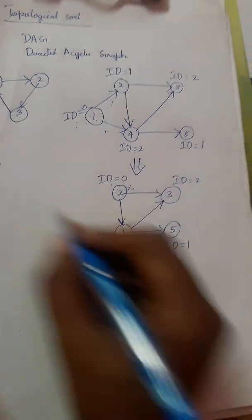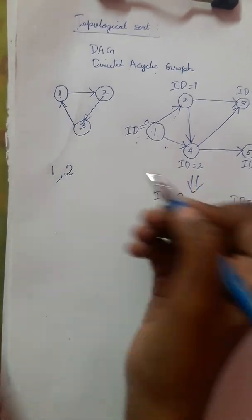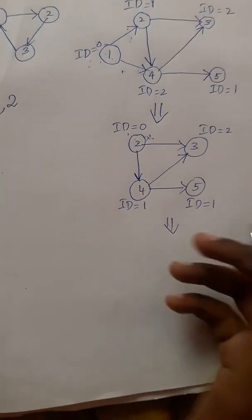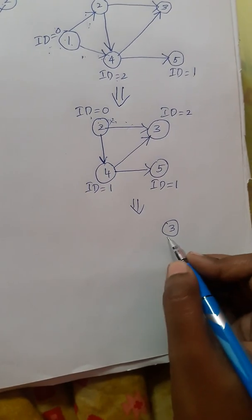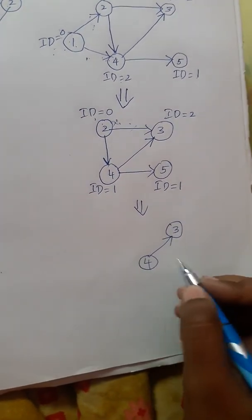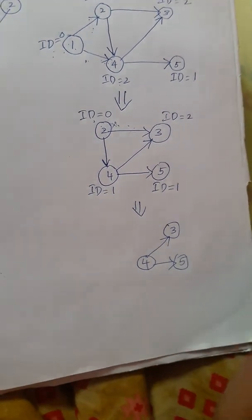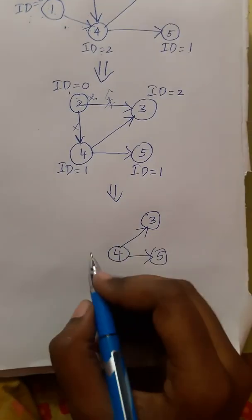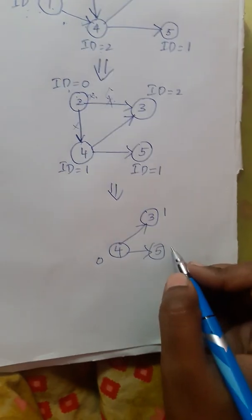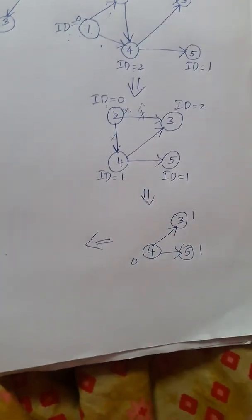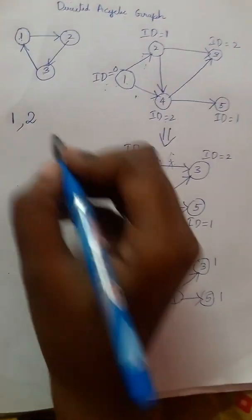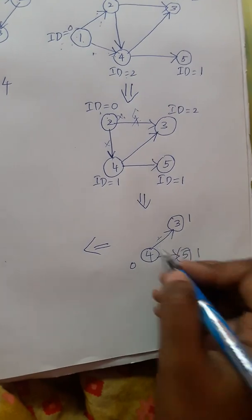We write '1, 2' in the result. After eliminating node 2 and its arrow marks, the remaining nodes are 3, 4, and 5 with in-degrees 0, 1, and 1. Node 4 has the minimum in-degree now — wait, node 3 has 0 — so we eliminate node 4, writing '1, 2, 4' in the result. The two arrow marks from 4 are removed.